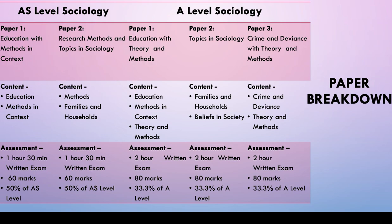You will also do beliefs in society, because that's what we offer. In your second year you will do crime and deviance with theory and methods, and also beliefs in society. Each of your assessments are worth 80 marks and worth 33.3 recurring percent of your complete A Level.